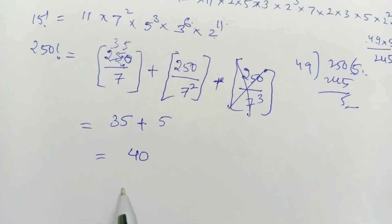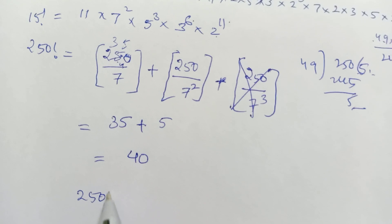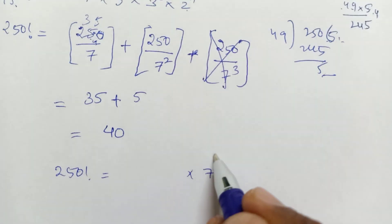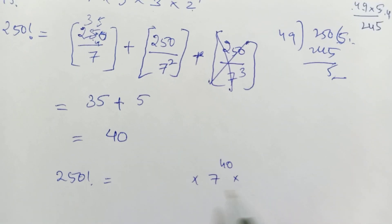35 plus 5 is 40. So the power of 7 in 250 factorial is 40. This is a shortcut method.